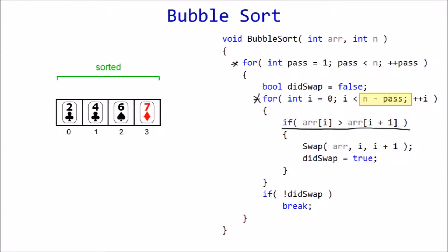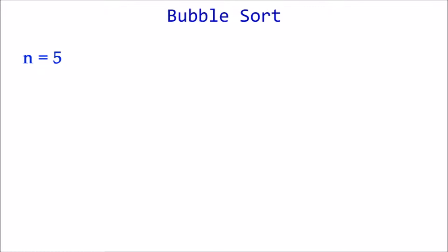Time for some visuals. We'll use n equals 5 for our example, so an array of five elements. A black circle represents one comparison. In the first pass, four comparisons are made, or n minus 1.